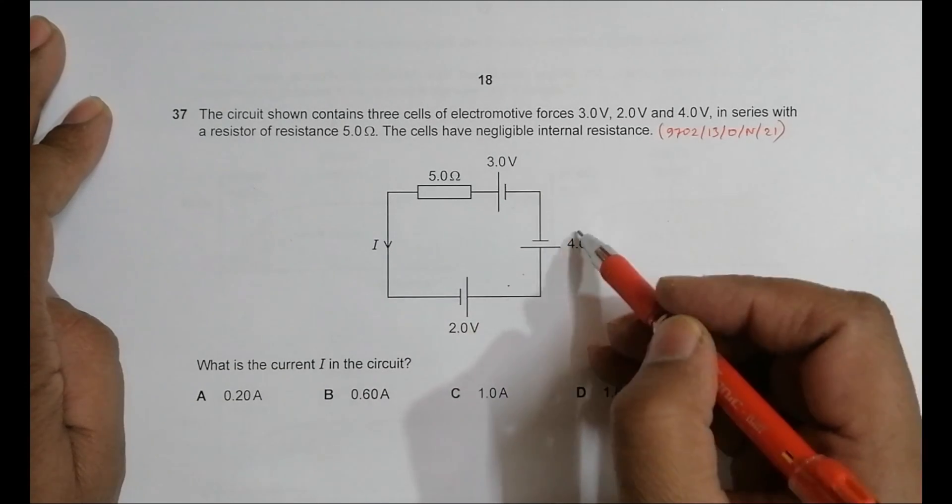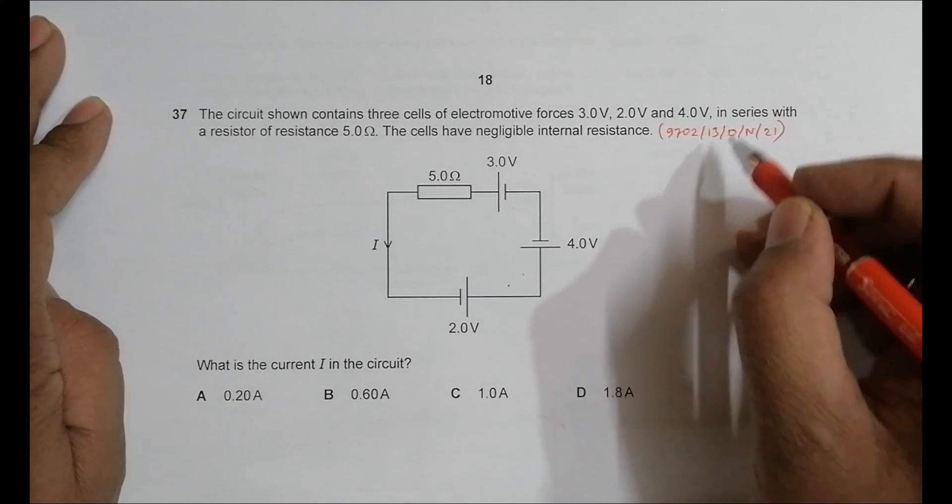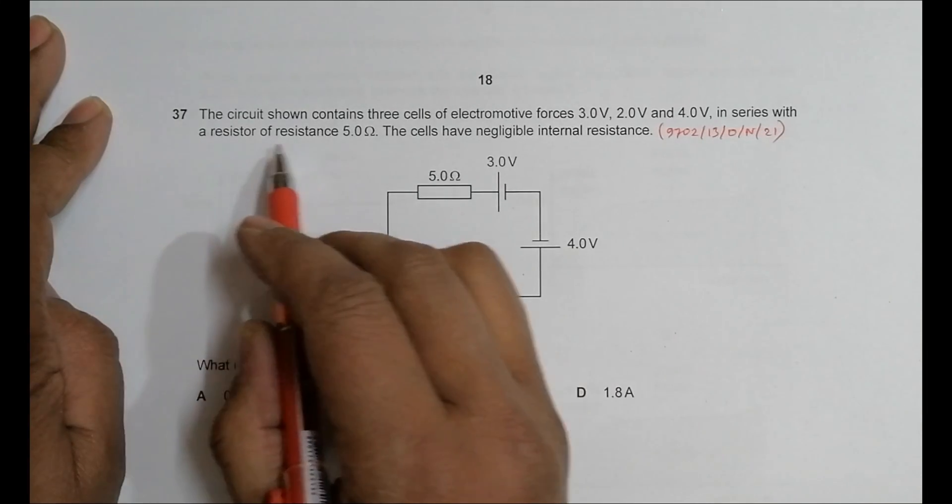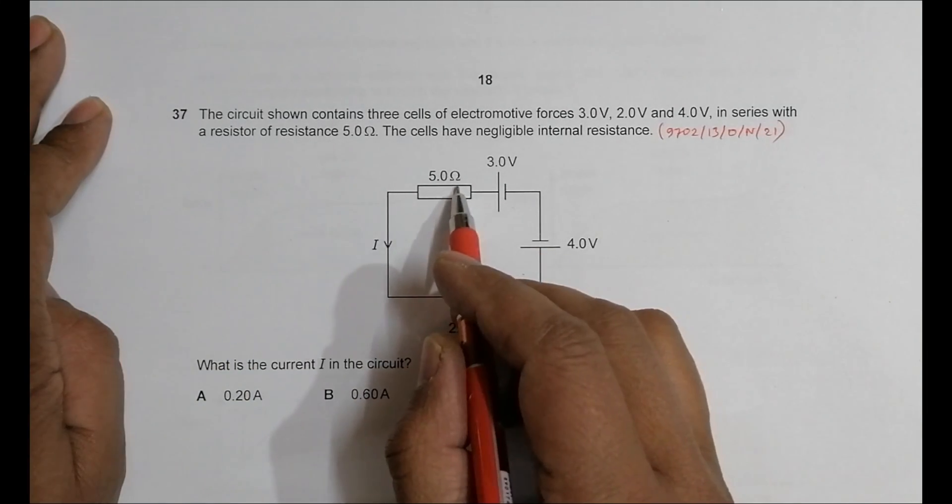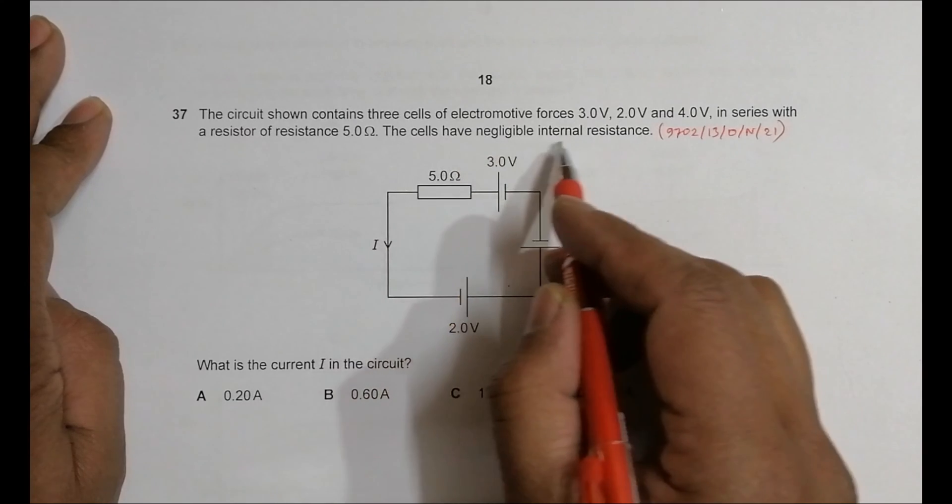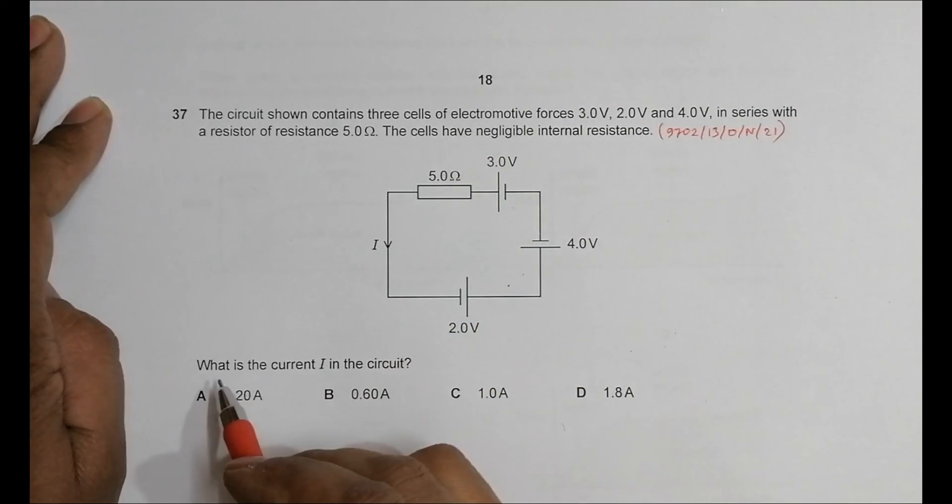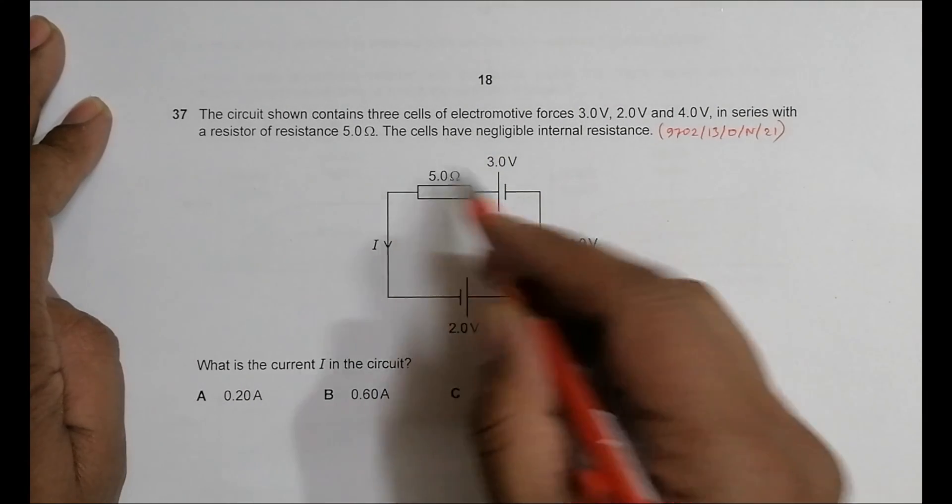The cells are in series with a resistor of resistance 5.0 ohms. The cells have negligible internal resistance, which makes things easier. What's the current I in the circuit? So we have to find what is the current I here.